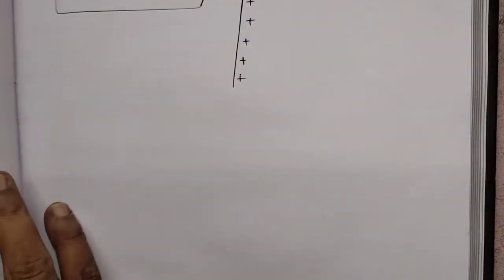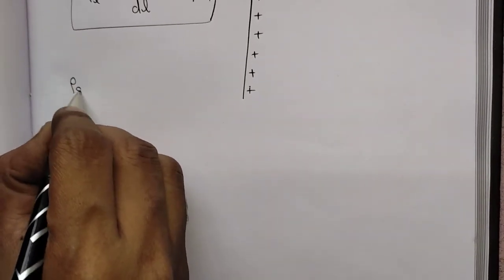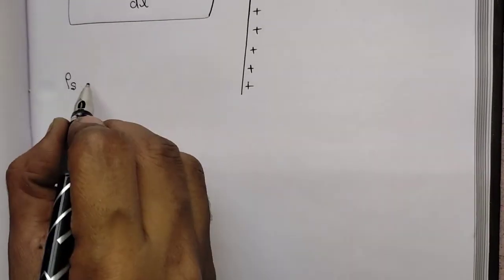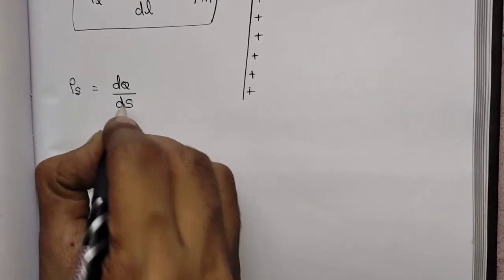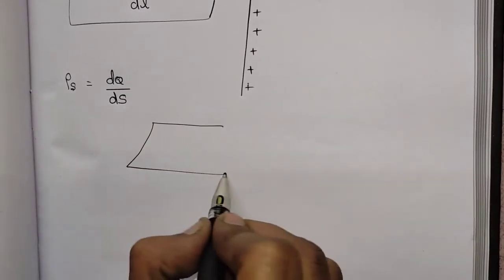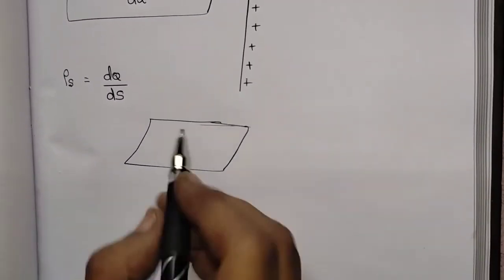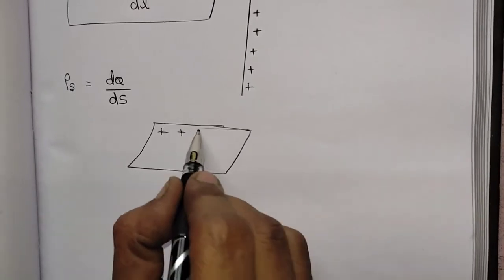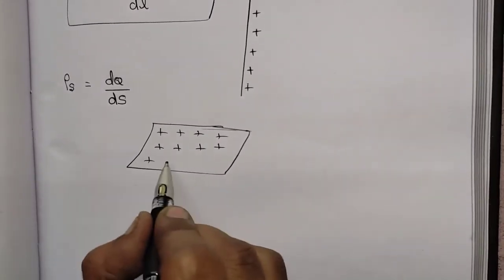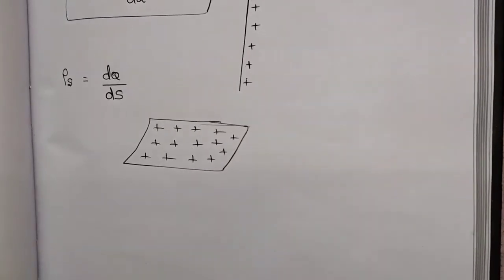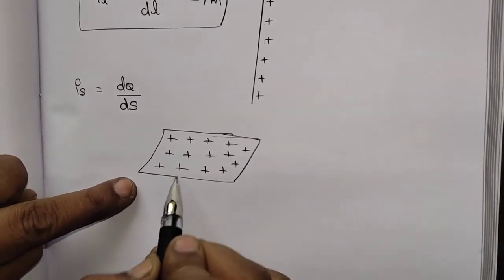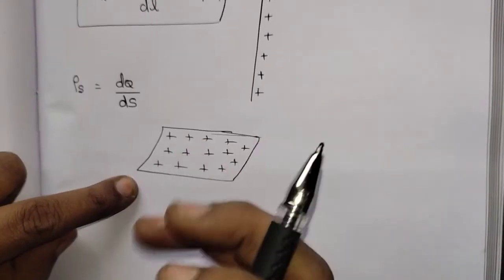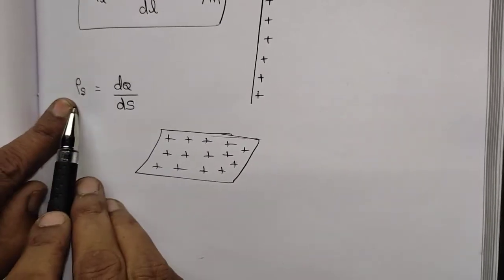Next we are going to see about surface charge density, rho_S. How do we define this? Similar to charge per length being line charge density, charge per surface is known as surface charge density. Consider a sheet — it is a surface which consists of a lot of charges distributed over it. How many charges this particular surface comprises is known as surface charge density.